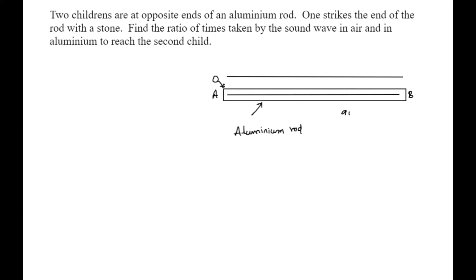The sound wave travels in two different media. The surrounding medium of the rod is air, and the other medium is aluminium. The sound travels in air as well as in the aluminium rod. The time taken from A to B through air I will call T_air, and the time taken from A to B through aluminium I will call T_alu.